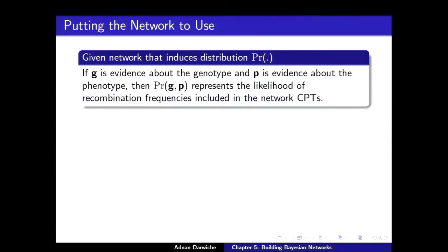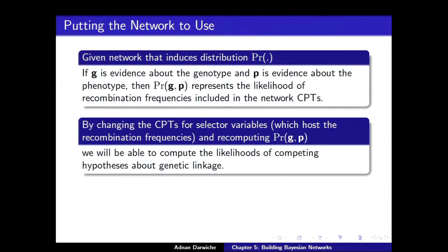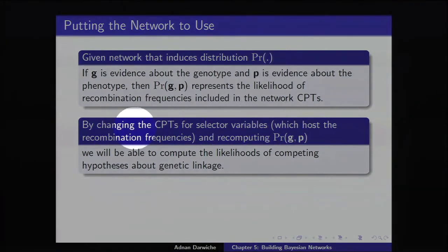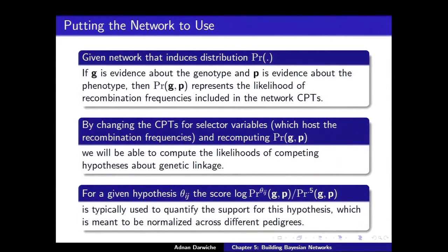Now that you have the network, you plug in values for the thetas and observe a particular genotype and phenotype, then compute the probability of seeing that evidence — which represents the likelihood of those recombination frequencies. By changing the CPTs for the selector variables to replace theta with theta prime, you can recompute and evaluate various hypotheses. Typically, people compute this with respect to theta equals one-half (unlinked) versus a proposed linked value.